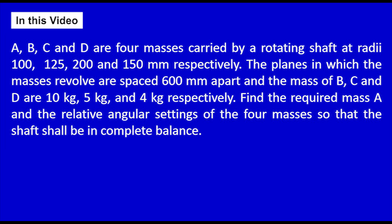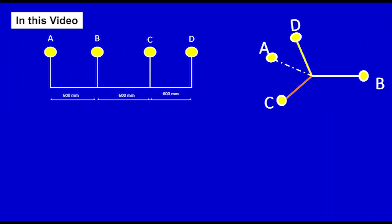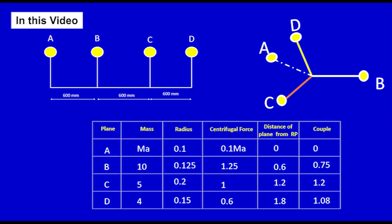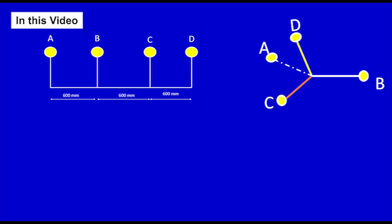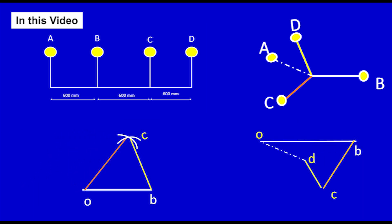In this video, I will demonstrate how to solve a problem related to balancing a rotating mass on a shaft. First, I will draw the displacement diagram, then I will create an angular diagram, then I will calculate the data in tabular form. Finally, I will construct the couple polygon and force polygon to find the magnitude and orientation of mass A. Let us start with the displacement diagram.